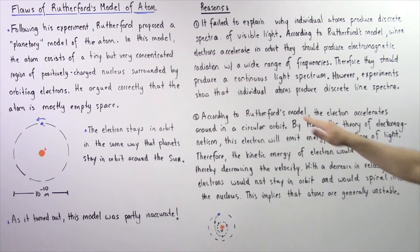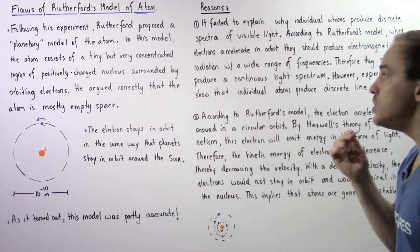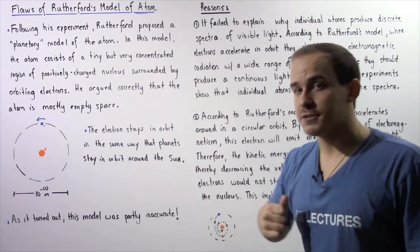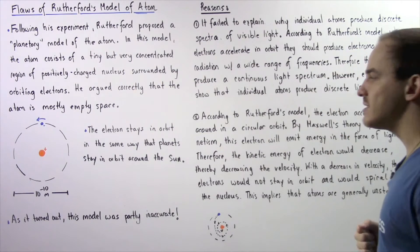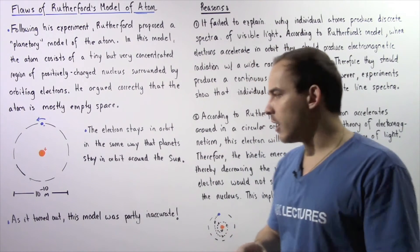experiments show that individual atoms do not produce continuous spectra, but rather they produce discrete line spectra. And we'll talk more about this when we discuss light spectra of atoms.